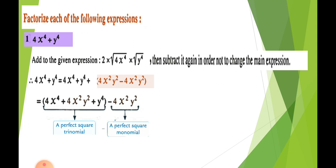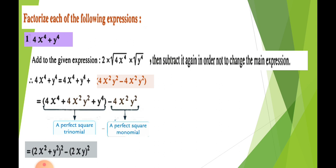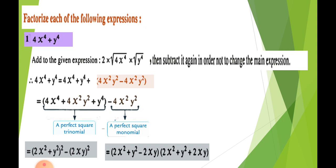So we can factorize these expressions as a difference between two squares — root of the first plus root of the second, times root of the first minus root of the second. The trinomial 4x⁴ + 4x²y² + y⁴ is a perfect square trinomial, so we factorize it as (2x² + y²)². The second term is (2xy)². Therefore the expression becomes (2x² + y²)² − (2xy)², and factorized: (2x² + y² − 2xy)(2x² + y² + 2xy).